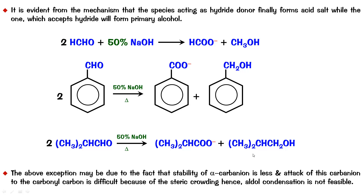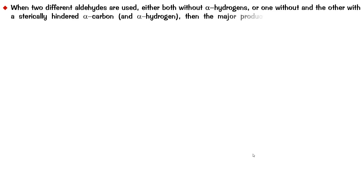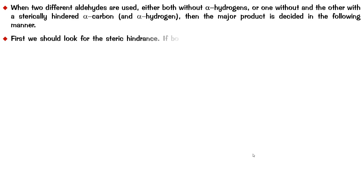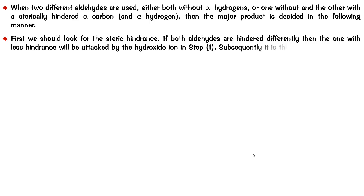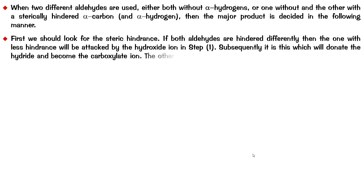The next situation we are going to look at is the cross-Cannizzaro. What happens when you have two different aldehydes? When two different aldehydes are used — either both without alpha hydrogens, or one without and the other with a hindered alpha carbon — the major product is decided as follows. First, look for steric hindrance. If both aldehydes are hindered differently, then the one with less hindrance will be attacked by the hydroxide ion in step 1. Subsequently, it is this one which will donate the hydride and become the carboxylate. The other aldehyde will get reduced.